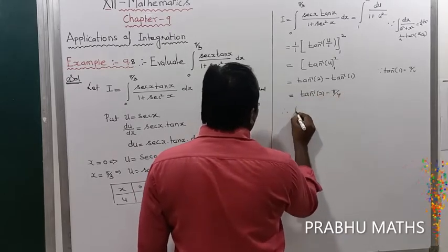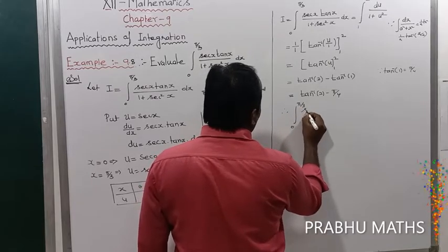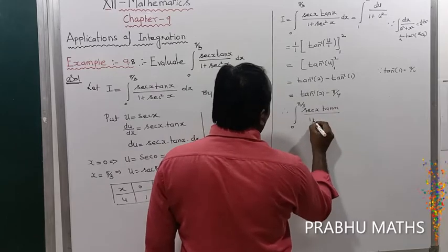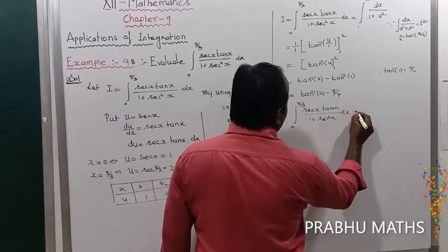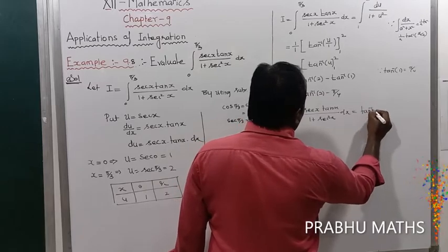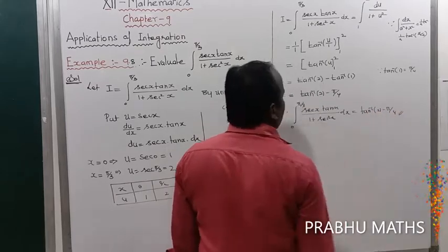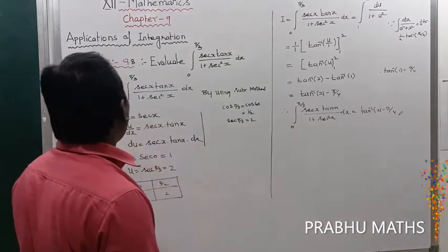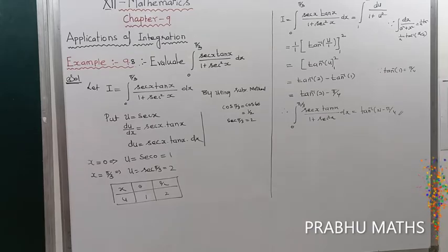Therefore, the solution to the integral from 0 to π/3 of sec x tan x divided by 1 plus sec² x dx equals tan⁻¹(2) minus π/4. Example 9.8 is completed. Thanks a lot.